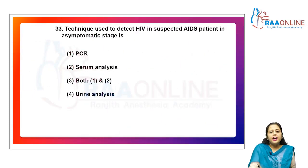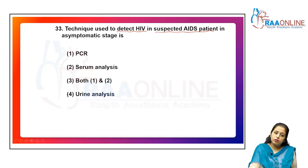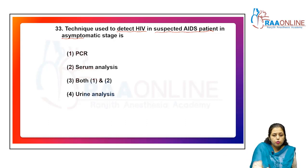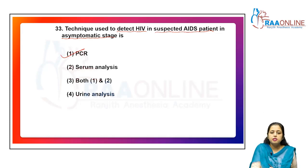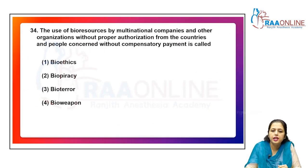The technique used to detect HIV in suspected AIDS patients in the asymptomatic stage is PCR — polymerase chain reaction. In the diagnostic or symptomatic stage, ELISA is used, and to confirm ELISA, the Western blot test is used. Since the question specifies the asymptomatic stage, the answer is PCR — option 1.